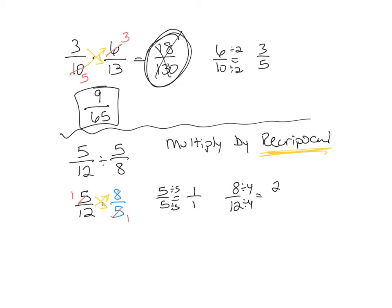To reduce that, I could divide both of them by four, and I get two and three. So the twelve became a three and the eight became a two. Then we multiply across: the red numbers, one times two is two, three times one is three. And I've got it.